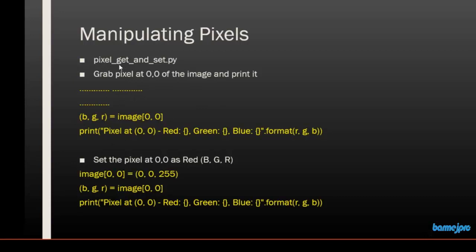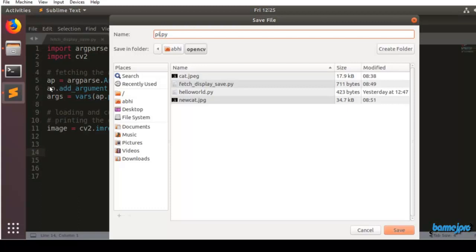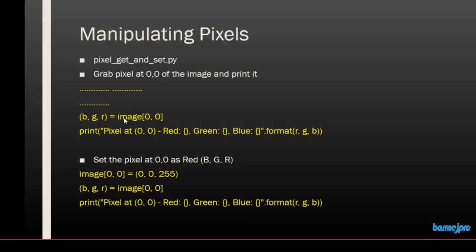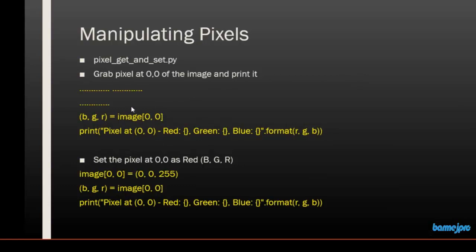We will name our program pixel_get_and_set.py and save this file. Now we are grabbing a pixel located at 0,0 — that is this point of the cat image that we have. We will write code so that this pixel will be grabbed and the color tuple will be given back to us. This line of code will get the pixel and return the three color values of that particular pixel.